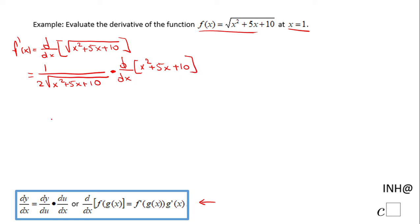So one more step in calculus. Let me copy the first part. 1 over 2 square root of x squared plus 5x plus 10. And then if you take a look, the derivative of this polynomial is nothing else than 2x plus 5.